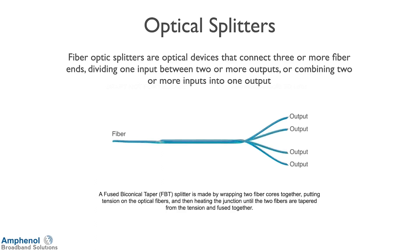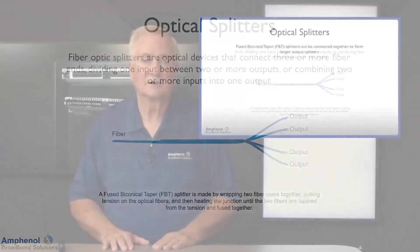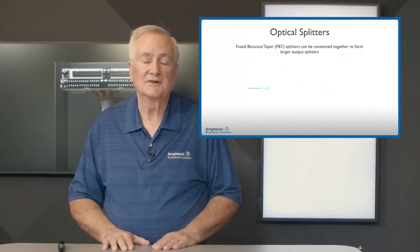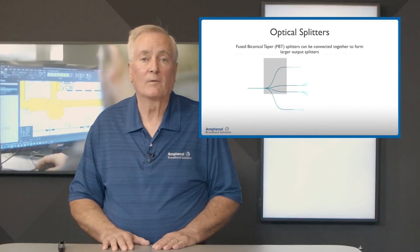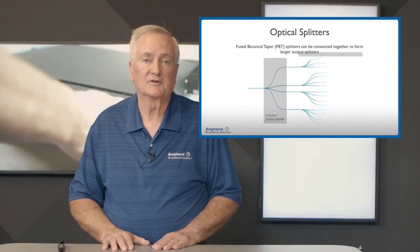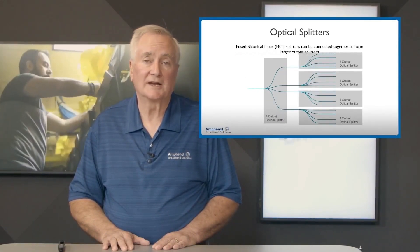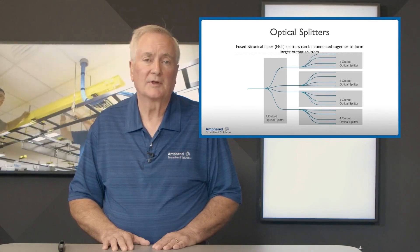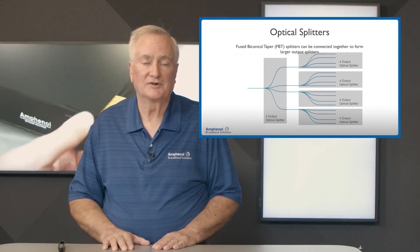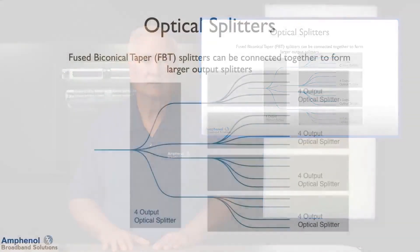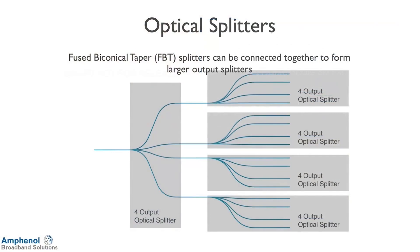To get more outputs, we do something similar to RF splitters — we take a four-way optical splitter and feed four more optical splitters with four outputs each, giving us 16 outputs. You can get up to 32 outputs this way, and that's typically what you have in fiber-to-the-home applications.